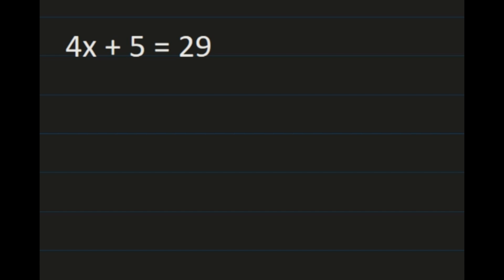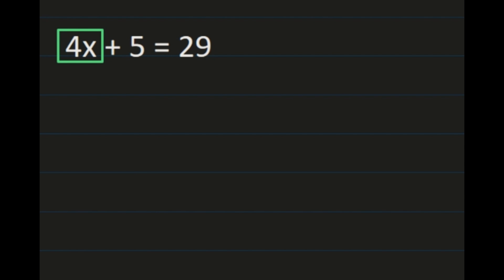Our first example is 4x plus 5 equals 29. We want to ultimately isolate x, like we did with one-step equations. We put a box around the x, but this is a two-step equation. We have 4 times x and we have to start by keeping that together. You may want to put a line down the center of your equal sign so you can keep the left-hand side and right-hand side separate.